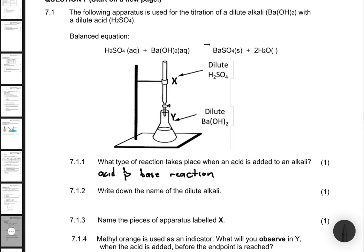7.1.2 asks us to write down the name of the dilute alkali. The acid is H₂SO₄, which is sulfuric acid. Ba is barium, and OH is hydroxide. If we have NaOH, that would be sodium hydroxide. So this will consequently be barium hydroxide. For 7.1.2, the answer is barium hydroxide.